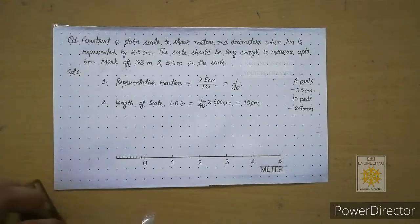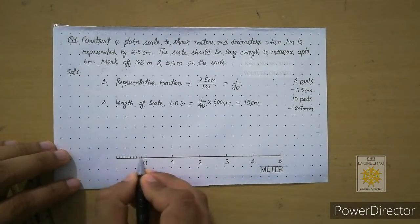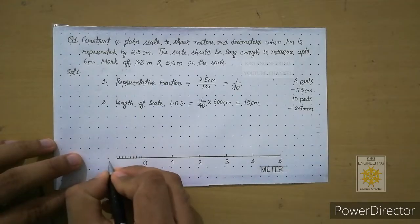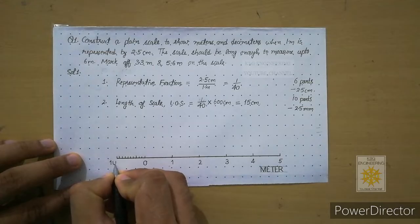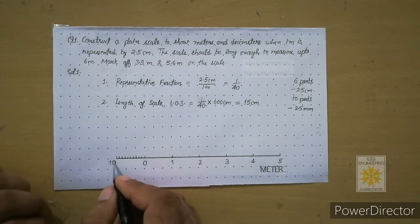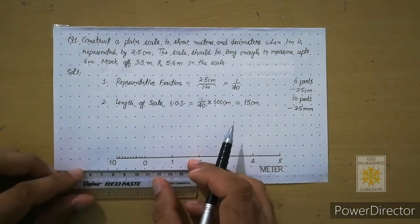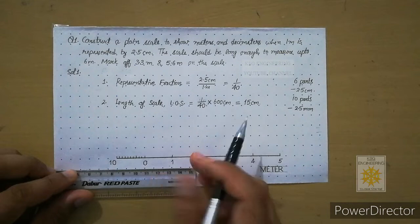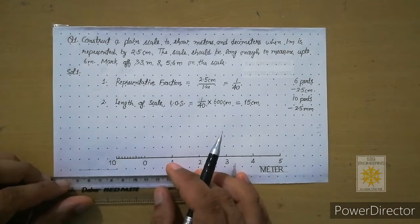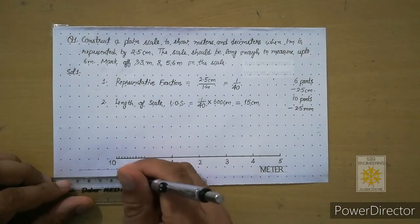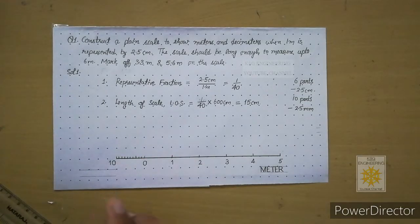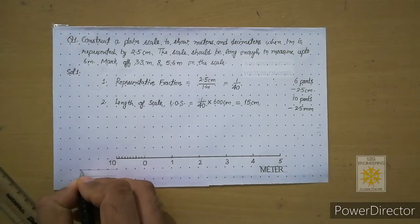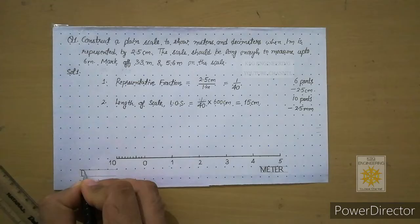After marking ten subdivisions, label them. Write ten in gothic style with numeral height around five millimeters. This is a decimeter scale, so draw two guidelines with a gap of about five to seven millimeters and write 'decimeter' freehand in gothic style using the letter shapes we learned in letter writing.